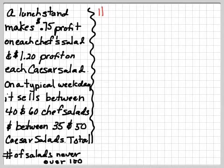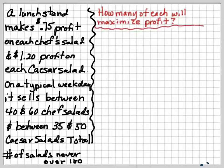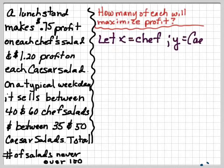So now we have to take what we have here and we have to make our constraints. The first thing is, I want to know how many of each salad will I need to sell to maximize my profit. Okay, that's my question. Well, my profit, first of all, let x be the number of chef's salads and y be the number of Caesar salads.